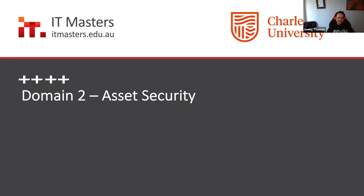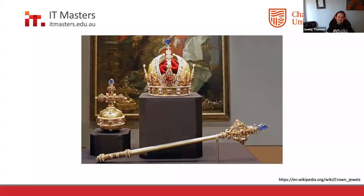Domain 2: Asset Security. In information security and cybersecurity, this is critical — knowing what you have, what it's worth, and how to secure it. I'm sure some of you have heard this before, but effectively it's about the crown jewels: knowing what your crown jewels are, where they are, who has access to them, and how to protect them.